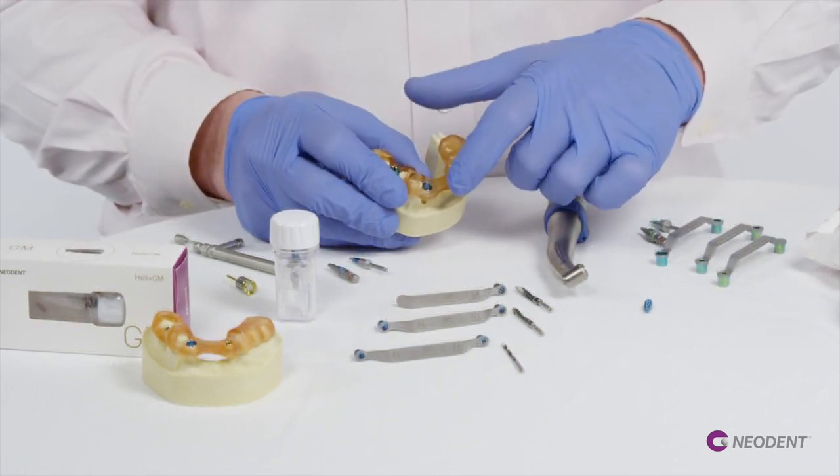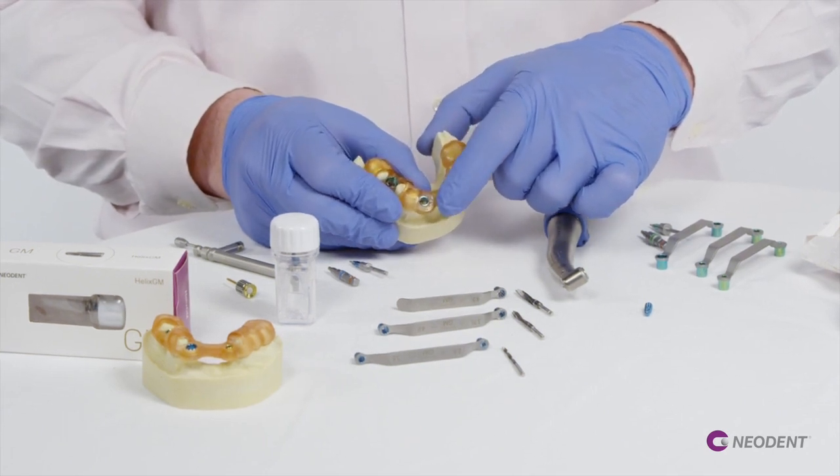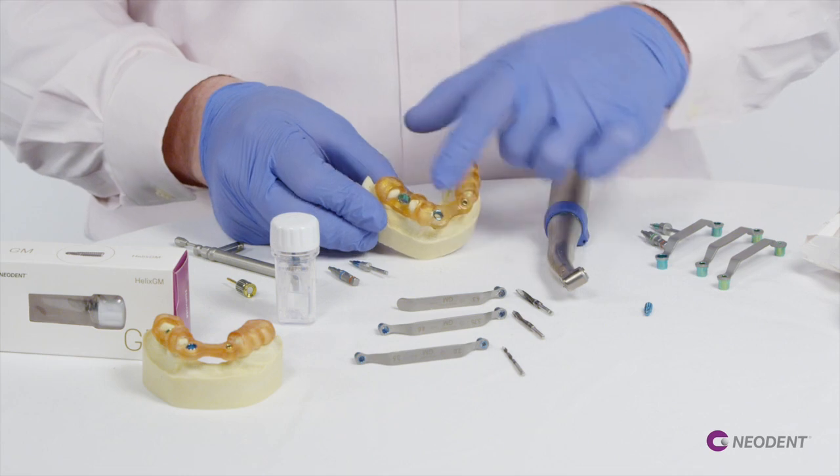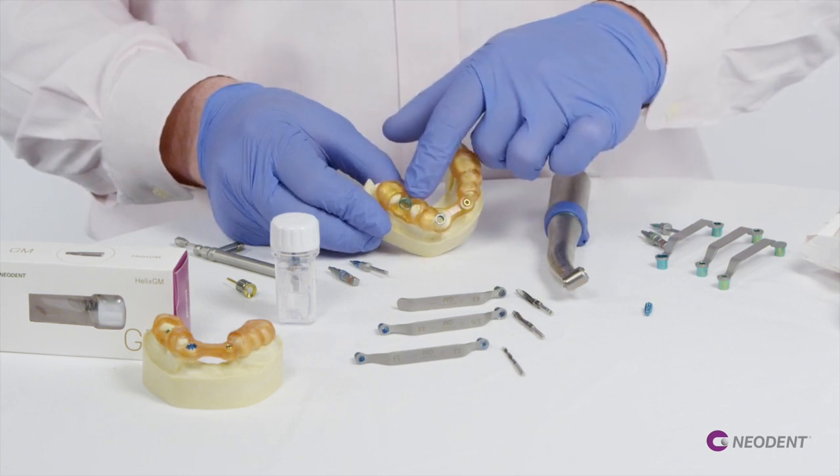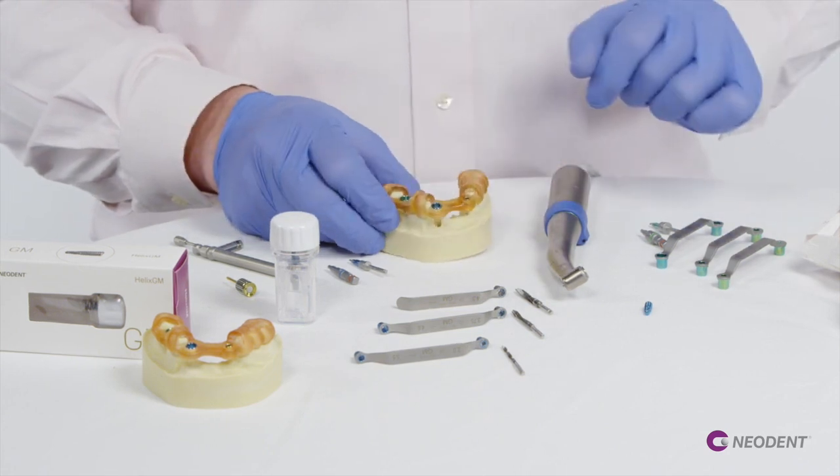Most of the work done with the Grand Morris guided surgery system is going to be done with this blue sleeve, and that's what we're going to show today. We do have an option in the posterior for green guided sleeves as well, which can place a 5 or 6 diameter implant.